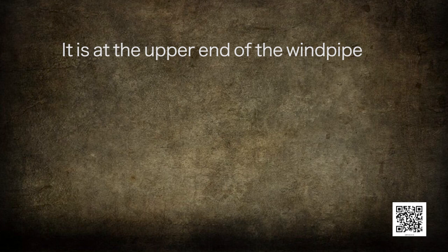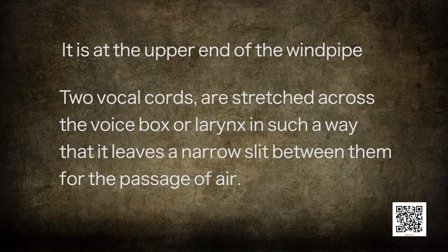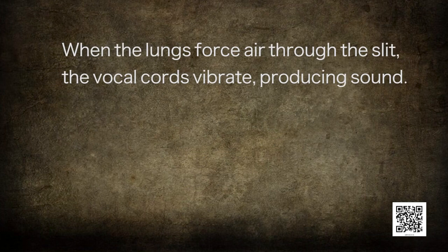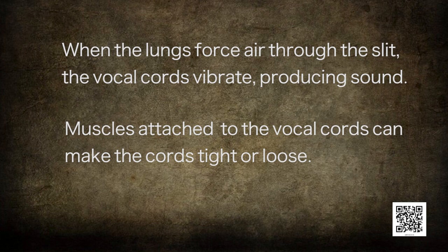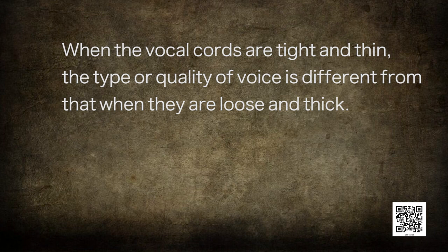You must be very excited about how this voice box produces sound. The voice box is at the upper end of the windpipe. Two vocal cords are stretched across the voice box or larynx in such a way that it leaves a narrow slit between them for the passage of air. When the lungs force air through the slit, the vocal cords vibrate, producing sounds. Muscles attached to the vocal cords can make the cords tight or loose. When the vocal cords are tight and thin, the type or quality of sound is different from when they are loose and thick.